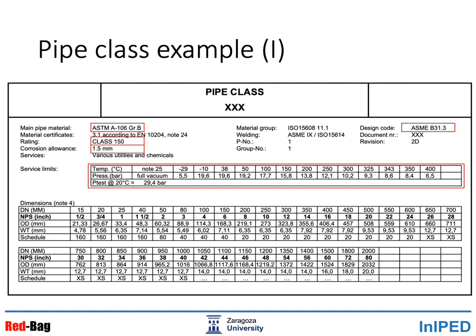In this picture we are showing an example of a pipe class. In the following series of this tutorial, we will see many examples of pipe classes and go through these documents in more detail. In the top left corner we have the pipe material — in this case ASTM A106 grade B. Below we can see the flux rating, class 150, and below that the corrosion allowance: the amount of material assumed to be lost over time as chemical substances erode the pipe.